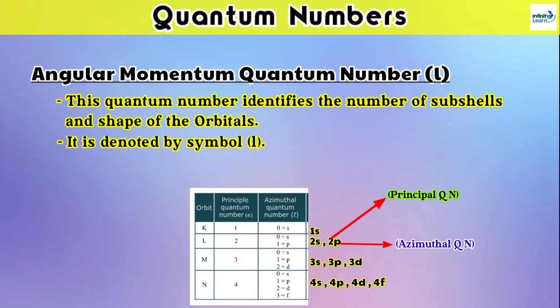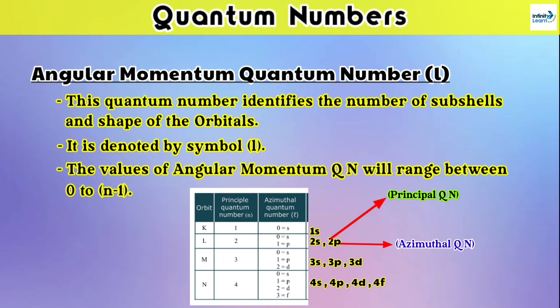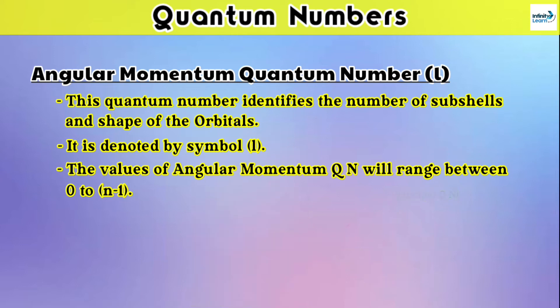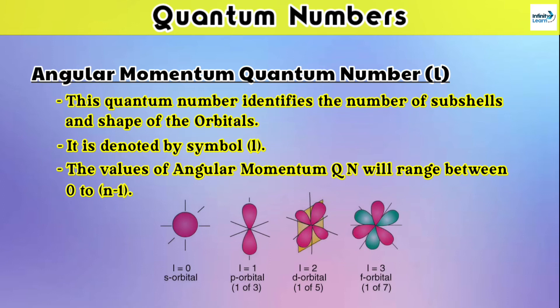The angular momentum quantum number is denoted by small l. The values of the angular momentum quantum number range from 0 to n−1. For all S subshells its value is 0, for P subshells it is 1, for D subshells it is 2, and for F subshells it is 3. These are the shapes of those subshells — you can see the pictures for understanding their structures more clearly.